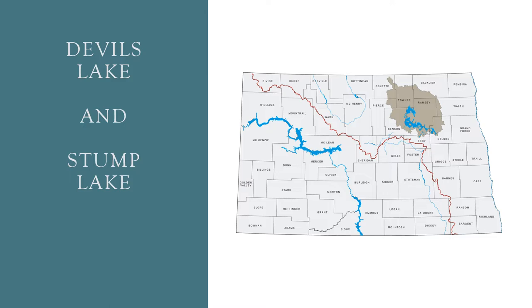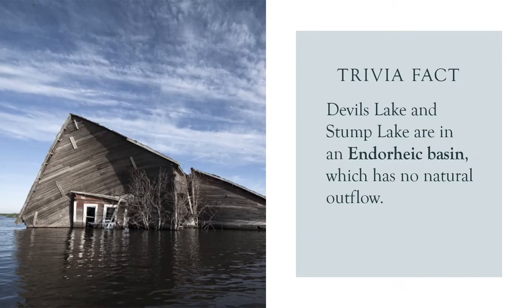All the water that flows into this region drains into Devil's Lake and Stump Lake. The topography around this basin is high enough that the water has to reach a really high point before it reaches a natural drainage into the Red River basin.